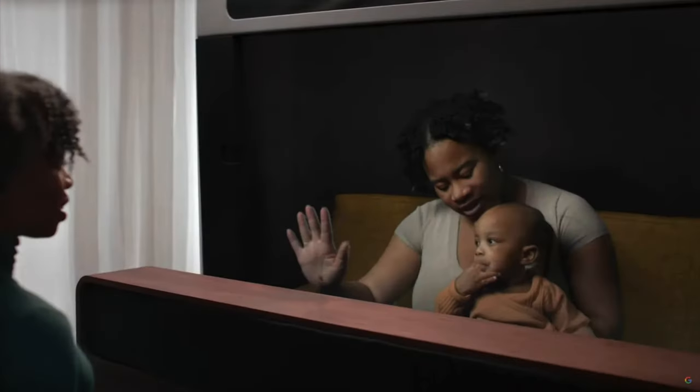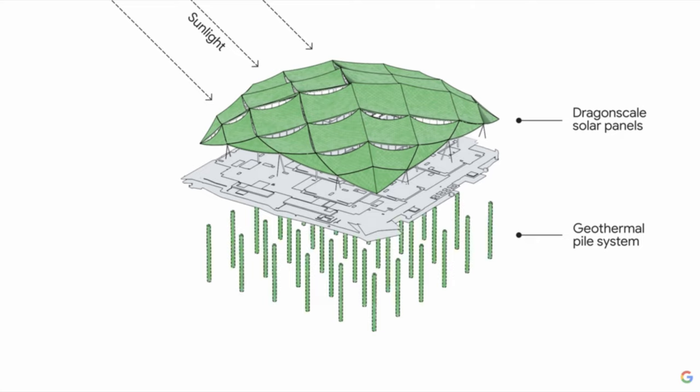There are some AR features where you can watch star athletes perform in front of you using AR. Project Starline creates a very realistic video call — it was hard to tell it wasn't the real person — using 3D rendering and eye tracking so height changes look realistic. Lastly, there were cool updates about the headquarters: they're adding dragonscale solar panels and a geothermal pile system as part of their initiative to be completely carbon-free by 2030, going beyond carbon-neutral to not using carbon at all.